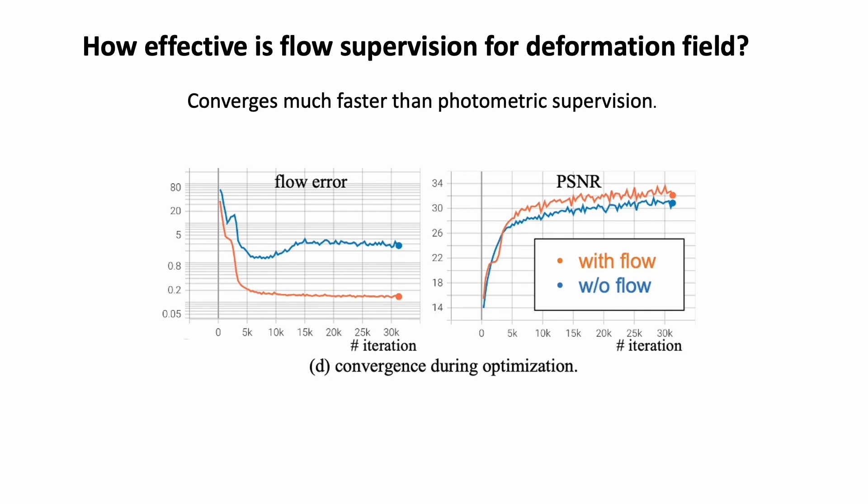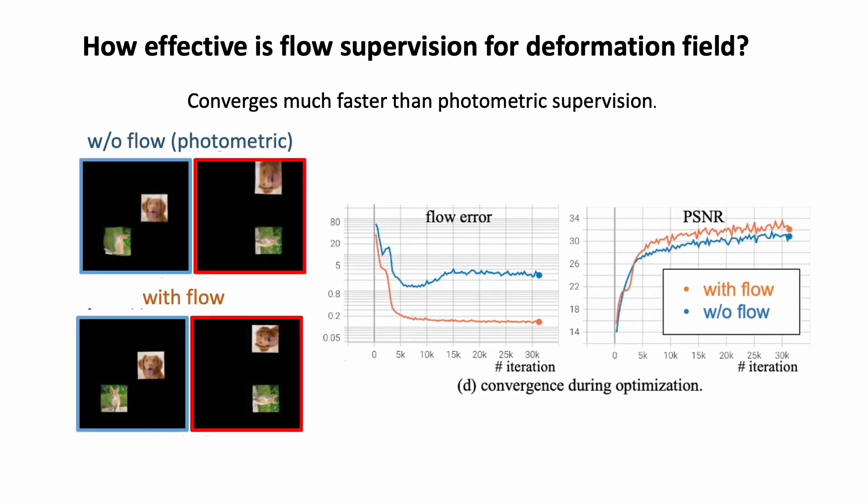Then, we compare our method to baselines where we only use the image photometric loss as supervision. We find that training with flow loss by our method converges significantly faster than training with only photometric loss. And as highlighted by the green arrows, the baseline without flow loss supervision cannot correctly recover the motion in our toy example.